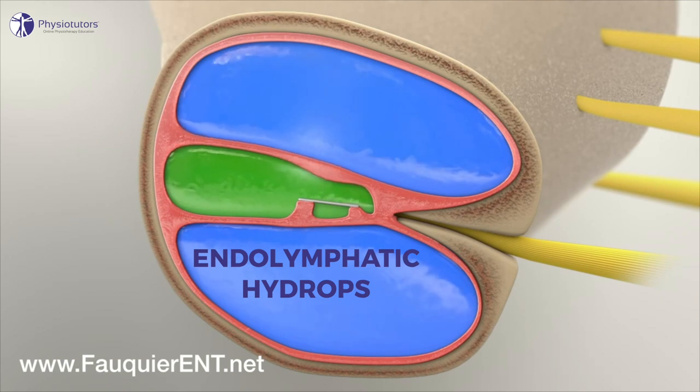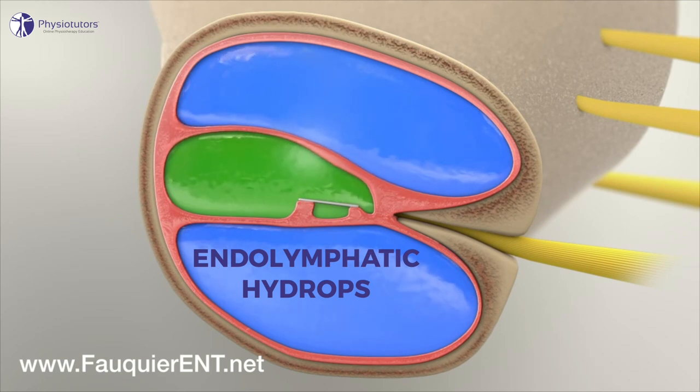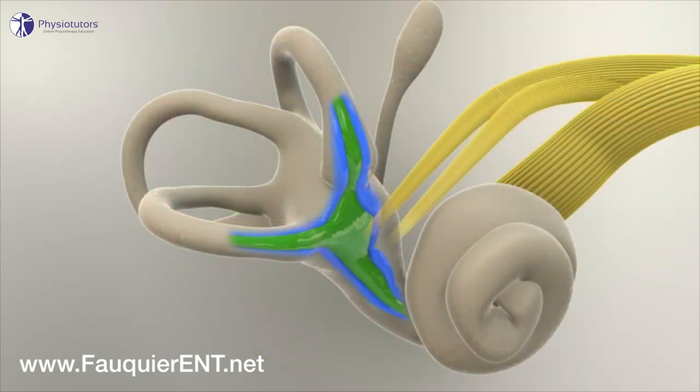The increase in the endolymphatic fluid may be due to a blocked endolymphatic duct or sac, an obstruction with scar tissue, or a narrowing from birth. Too much secretion of fluid by the stria vascularis or an enlarged fluid pathway into the ear such as the vestibular aqueduct.